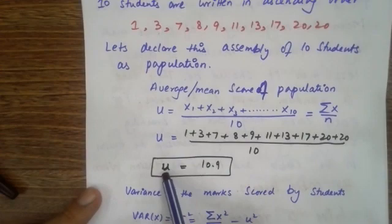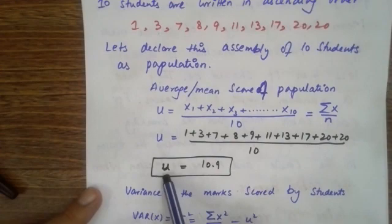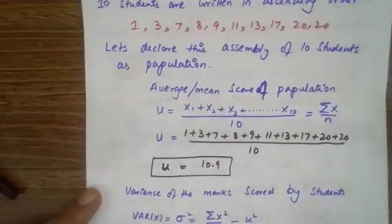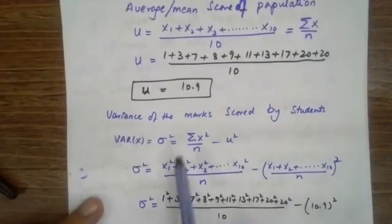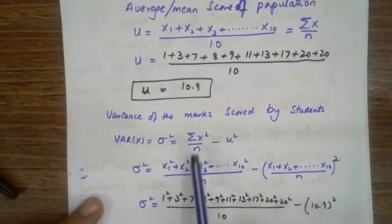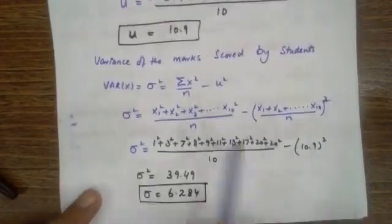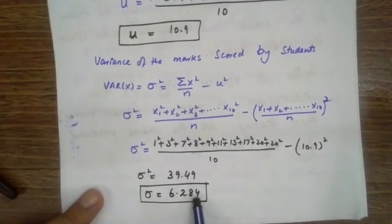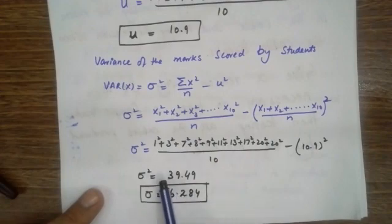Mu specifically stands for the average of the whole population. You know that this symbol Mu is also used for micro and for coefficient of friction, but here Mu is the average score of the population, which is 10.9. Applying the formula Sigma X² over N, the variance of the population is 39.49 and the standard deviation is 6.284.